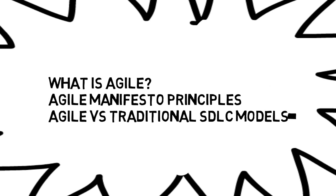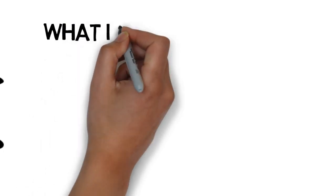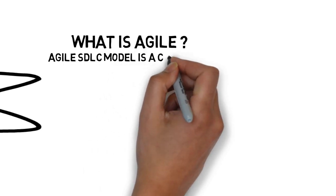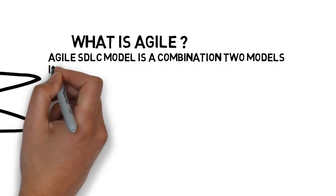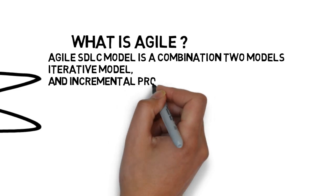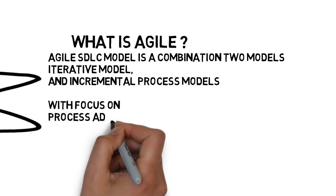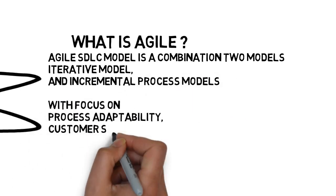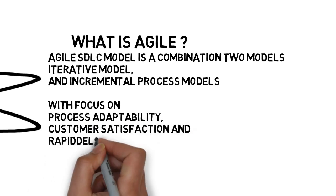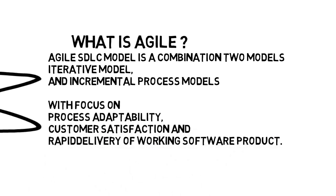We begin with what is the Agile model. The Agile SDLC model is a combination of two models — the iterative model and the incremental process model — with a focus on process adaptability, customer satisfaction, and rapid delivery of working software product.